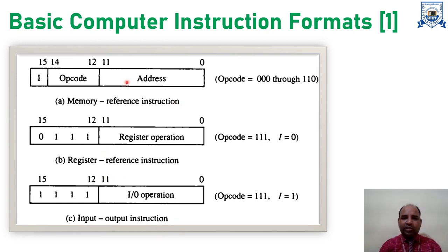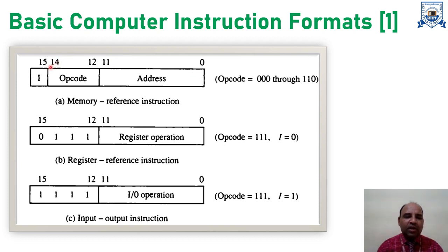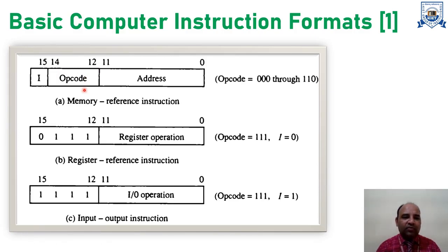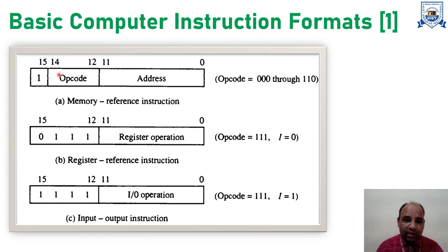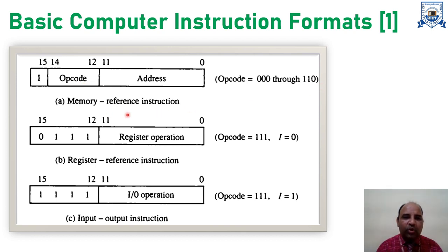Let us understand each computer instruction format in detail. Every computer instruction format within the system is represented using 16 bits, ranging from bit 0 to bit 15. Bits 12, 13, and 14 make up the opcode part — the operation code specifying what operation to perform, whether addition, subtraction, complement, shift, or any other operation. When the opcode value ranges from 000 to 110, it is a memory reference instruction.